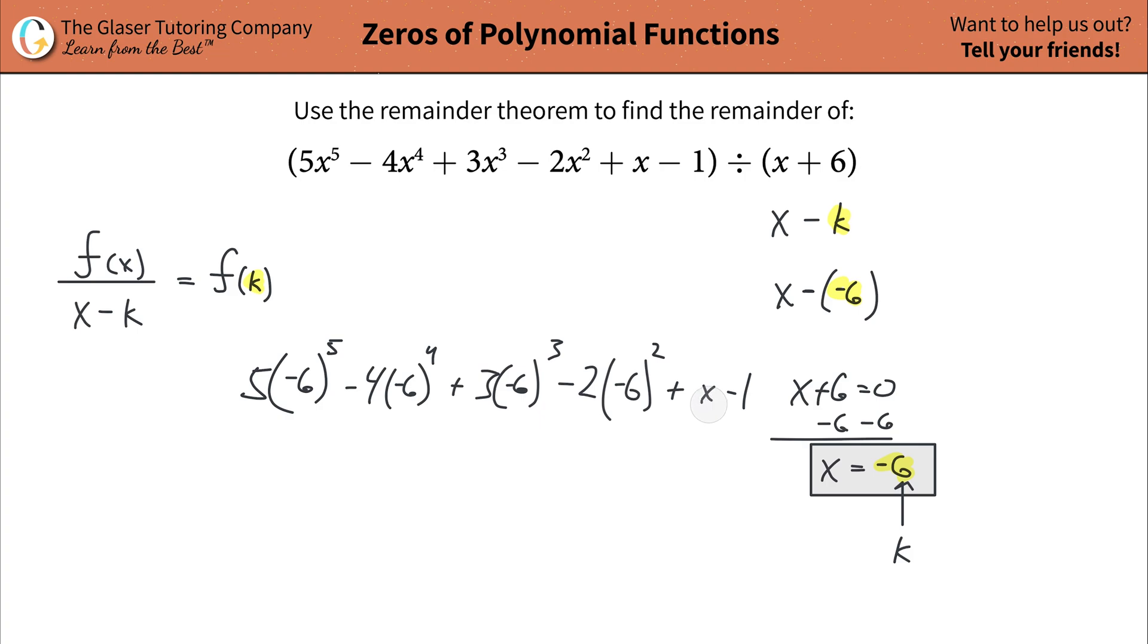One little mistake. Don't forget that x should be a negative 6. All right. Now plug that into the calculator. This looks a little strange, but hopefully we're right. I got a negative 44,791. Now, I double-checked it. That should be good.